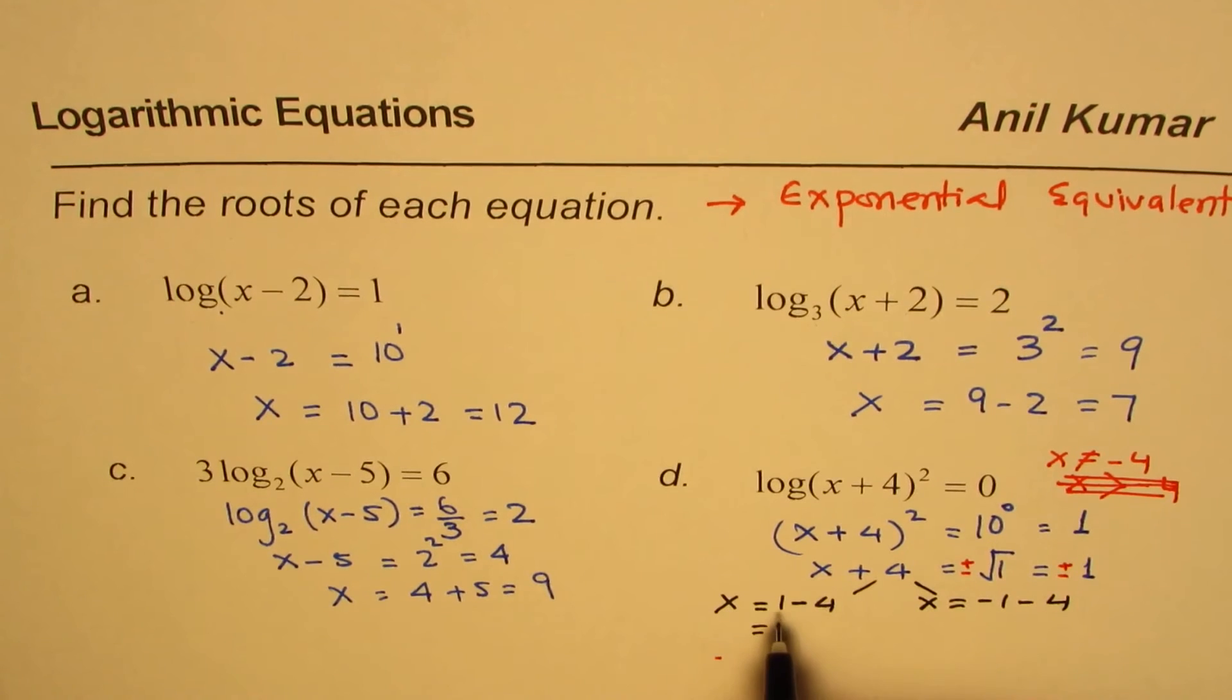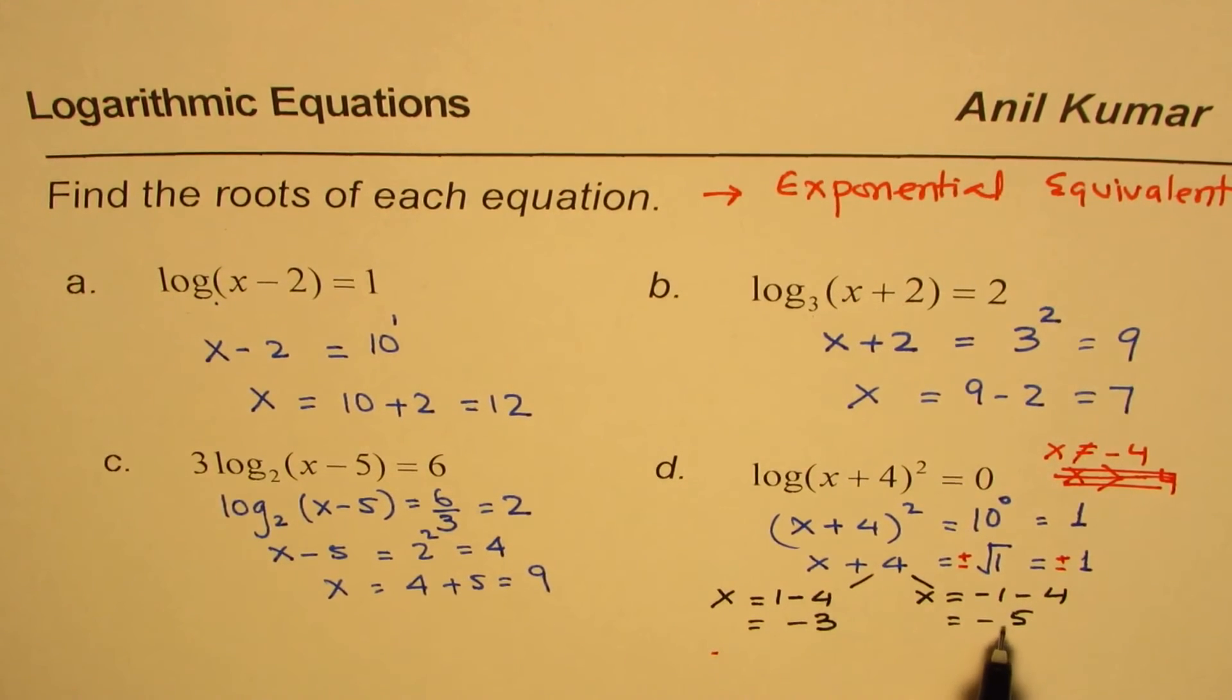So x equals 1 minus 4 gives us the value of minus 3. And here we get the value of x as minus 5. You get an idea? So minus 5.